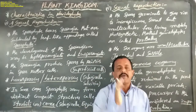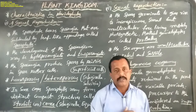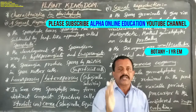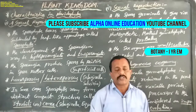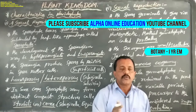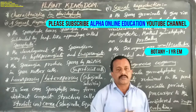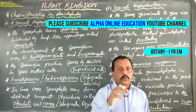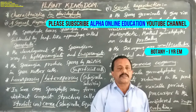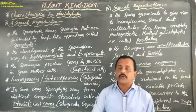In bryophytes, all spores are homospores — all spores are similar in size. But in pteridophytes, some species are homosporous and some are heterosporous. So two types of phenomena appear in pteridophytes: homospory and heterospory.